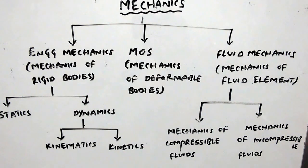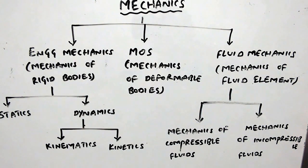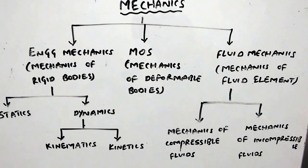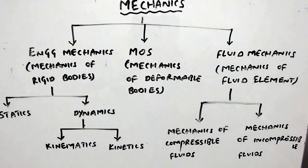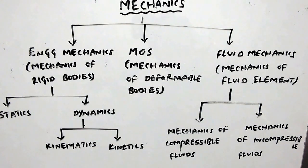We can sub-classify engineering mechanics into statics and dynamics. Statics is a branch of engineering mechanics that deals with rigid bodies under static conditions, whereas dynamics is a branch of engineering mechanics that deals with bodies under dynamic conditions.